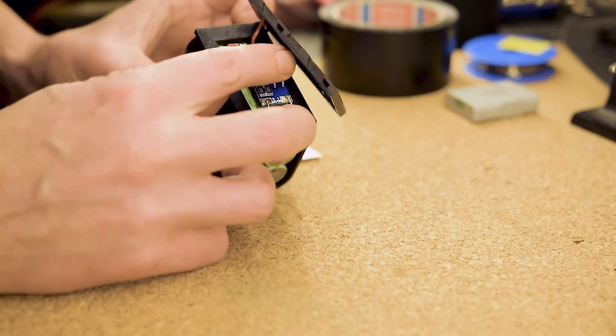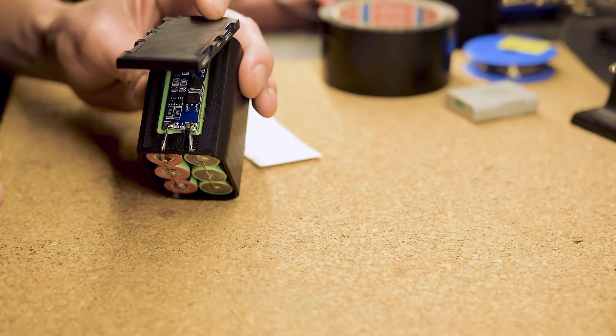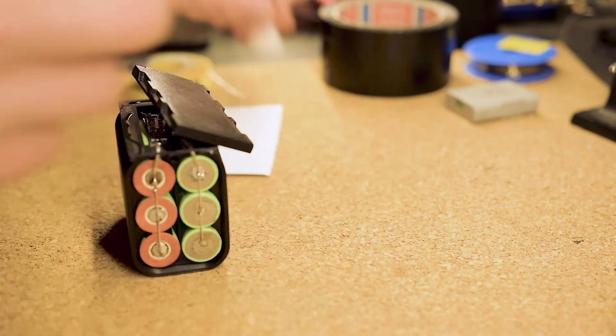In the next step, we stick the BMS to the double sided tape. Then, we glue the base plates together. Make sure the edges are flush.